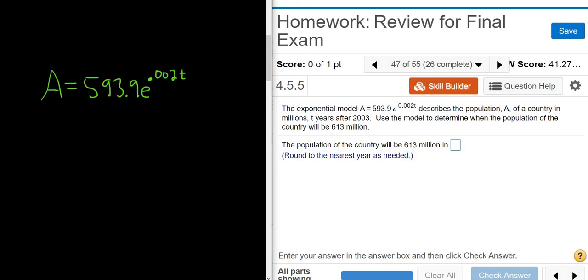Use the model to determine when the population of the country will be 613. Okay, so we want the population to be 613. This entire thing is the population, so we just set this equal to 613. And then we just have to solve for t.